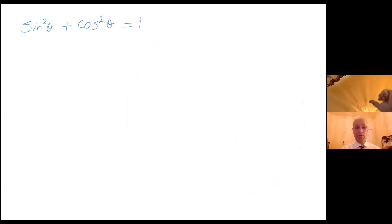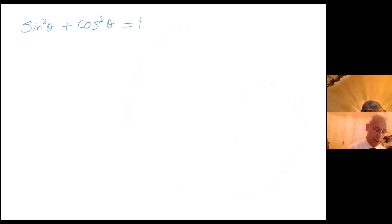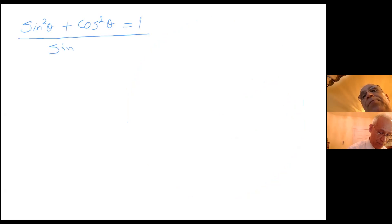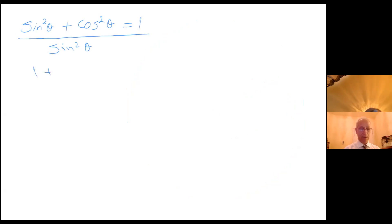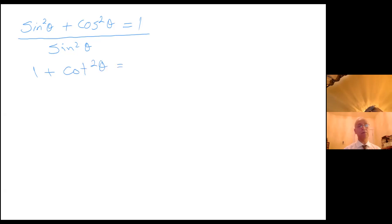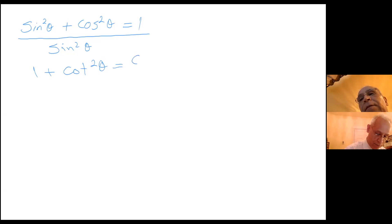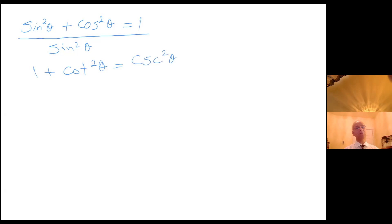Also, from the instructional video on WebAssign, you notice that if you divide both sides of this equation by sine squared theta, you have one plus cosine squared divided by sine squared, which is cotangent squared of theta, equals one over sine squared, which is cosecant squared of theta.